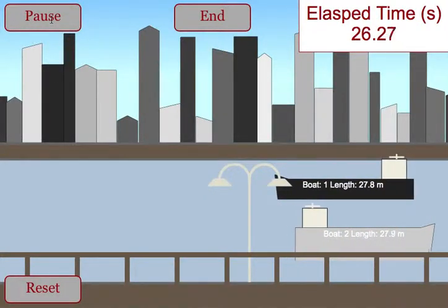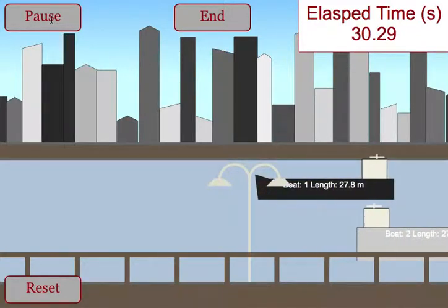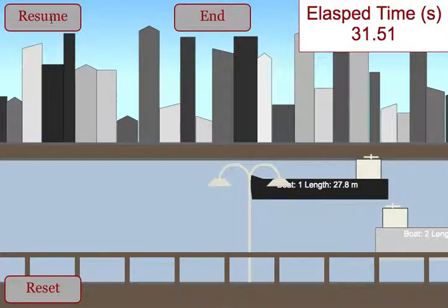They would do the same thing for boat one. They get the time of the very front reaches, the time that the very back reaches, get the delta T, and then the speed.